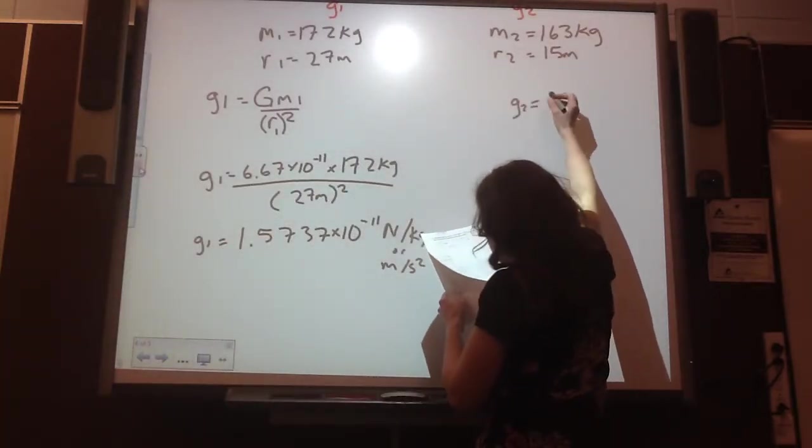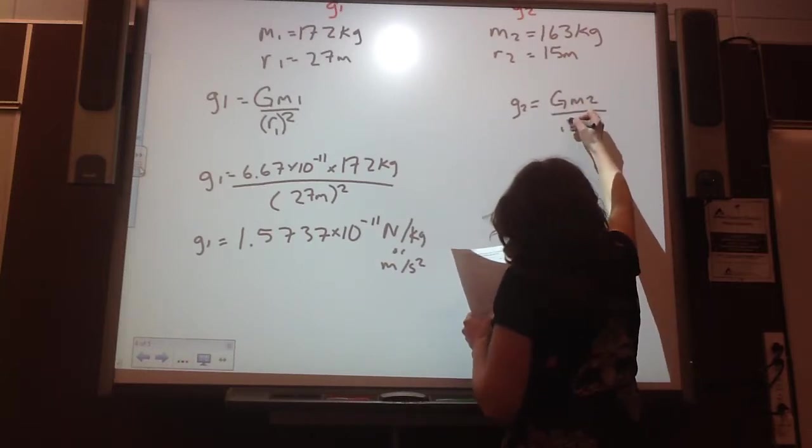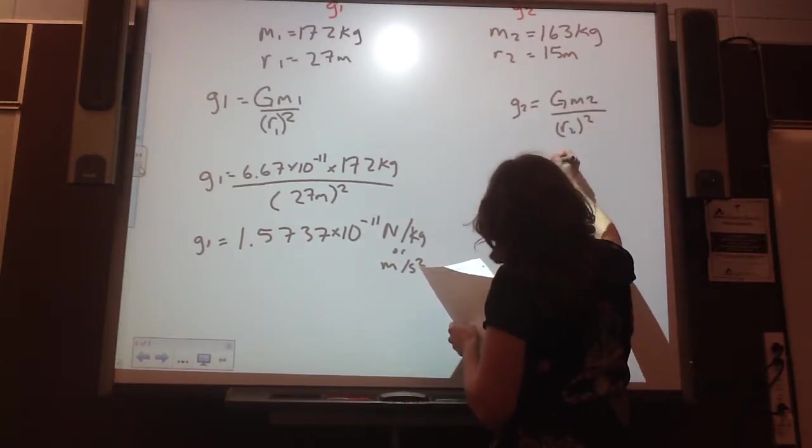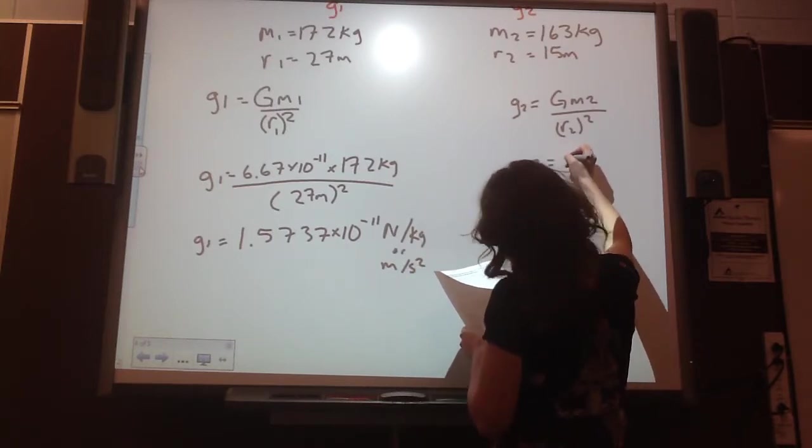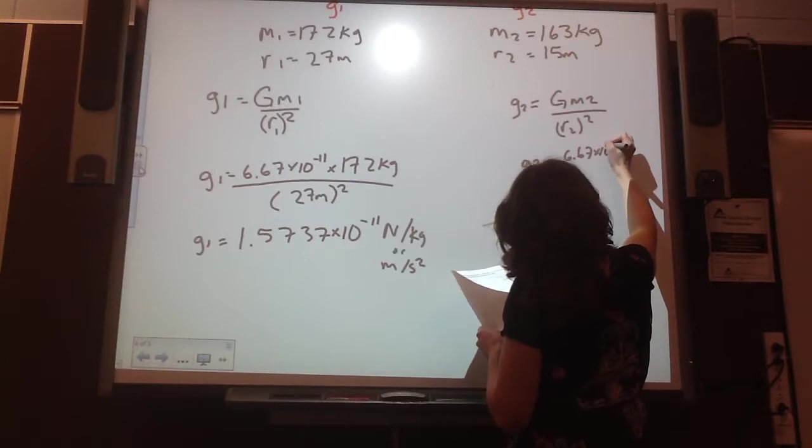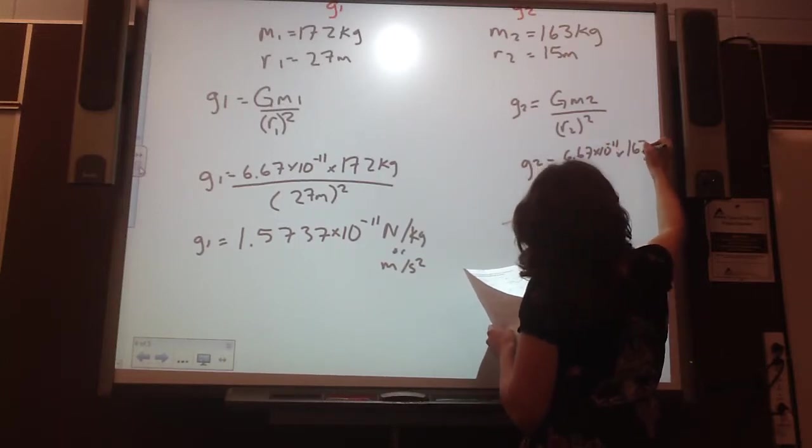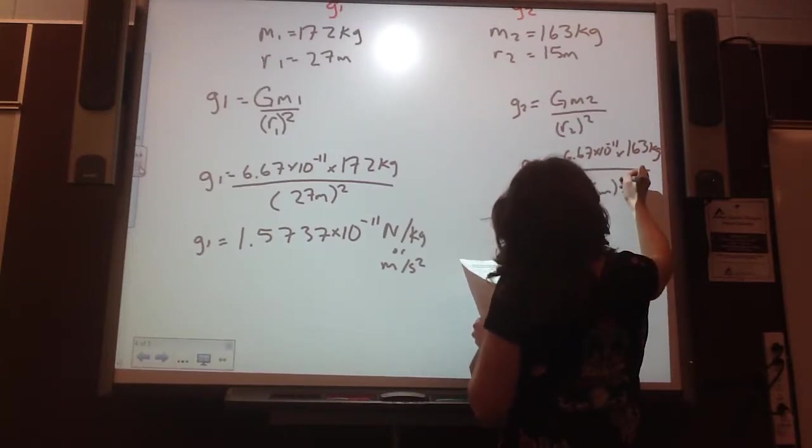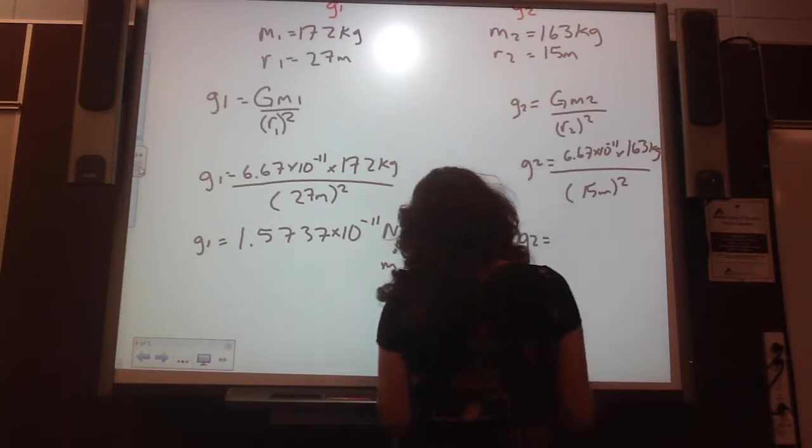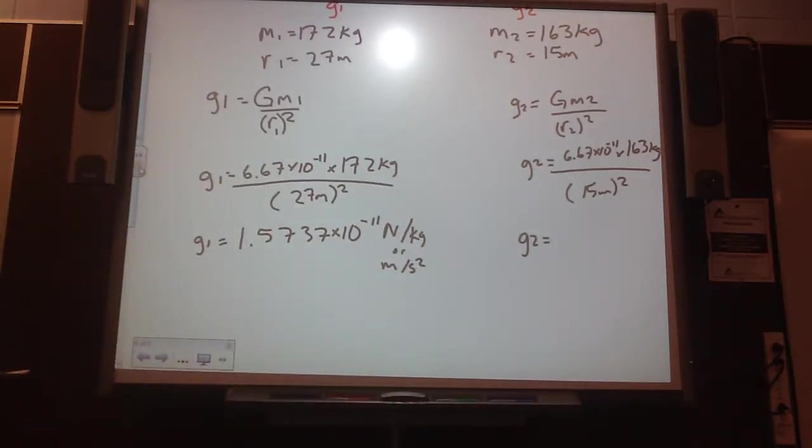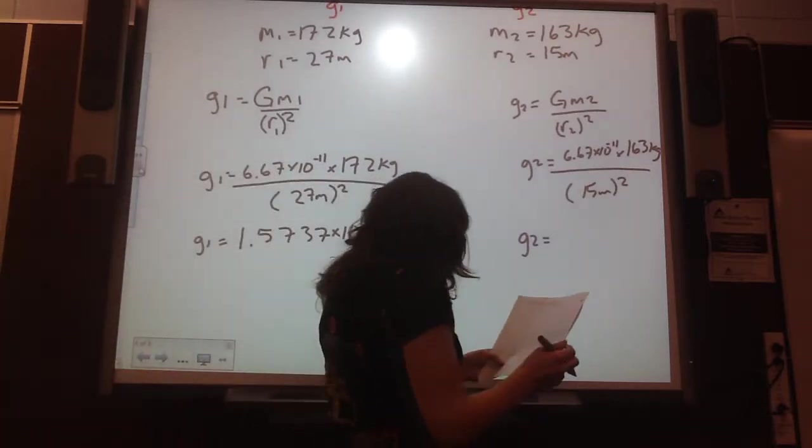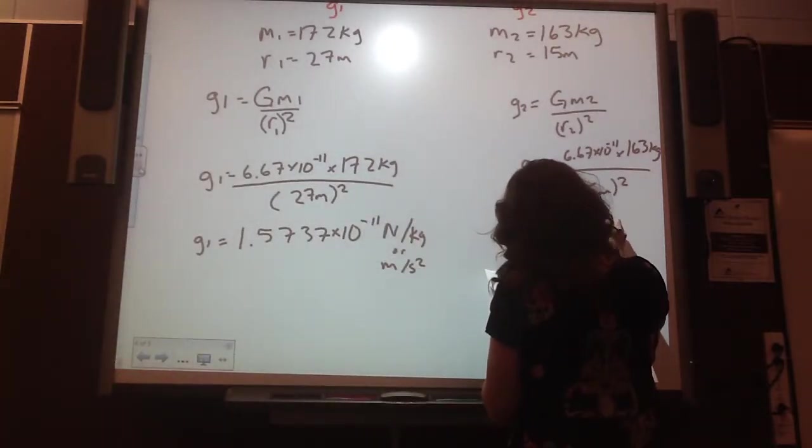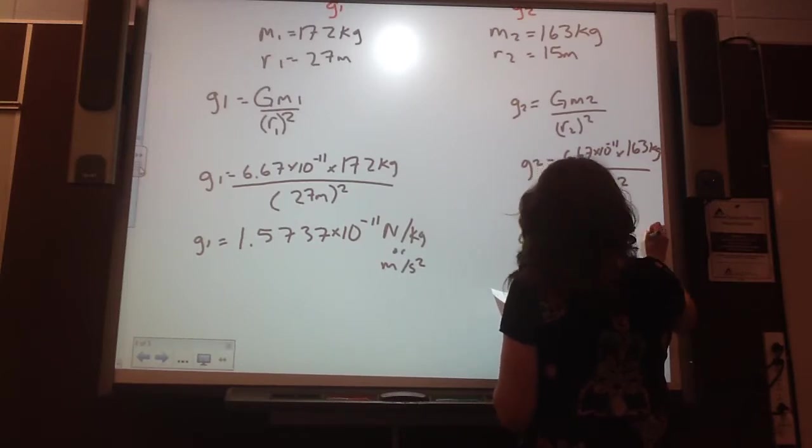Then G2 is G times M2 over R2 squared. So 6.67 times 10 to the negative 11 times 163 kilograms, all divided by 15 meters squared. So this G2 when you plug it in is 4.832 times 10 to the negative 11 newtons per kilogram.